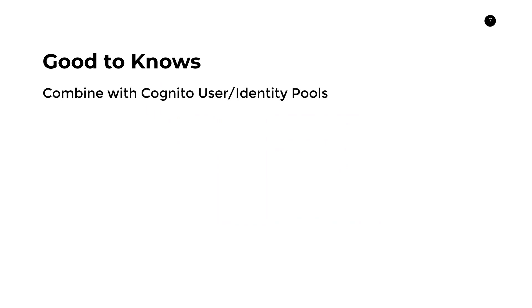The good-to-know here is that we can combine IAM policies and dynamic values with Cognito user and identity pools. If you've never used Cognito, it allows for authentication — who are you — and authorization — what do you have access to. These two questions are relevant for building a policy that restricts access to particular users. How can we say only a particular user has access to a particular subset of rows and write that policy just once?